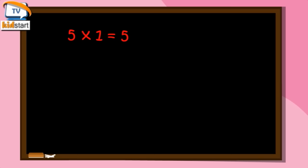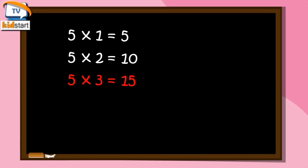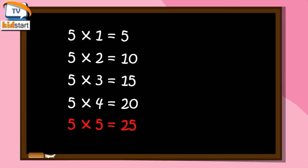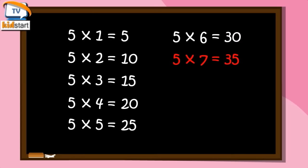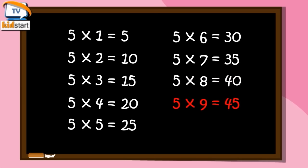Five ones are five. Five twos are ten. Five threes are fifteen. Five fours are twenty. Five fives are twenty-five. Five sixes are thirty. Five sevens are thirty-five. Five eights are forty. Five nines are forty-five. Five tens are fifty.